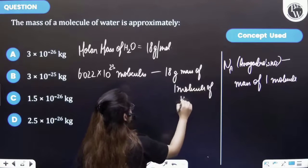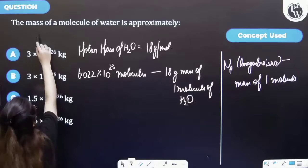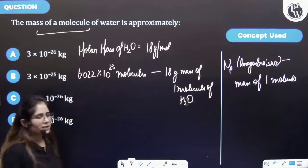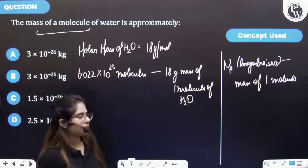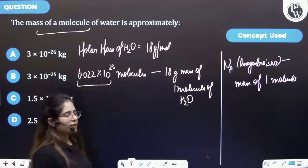Right. But in question we have given that we have to find the mass of a molecule. That means we need to find mass of one molecule. Now this is for how many molecules? This is for these many molecules, then one molecule will be?